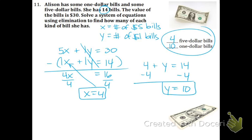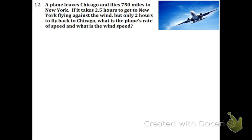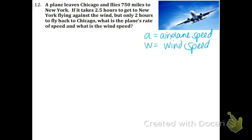Airplane problem coming up. A plane leaves Chicago and flies 750 miles to New York. If it takes 2 and a half hours to get to New York flying against the wind, but only 2 hours to fly back to Chicago, what is the plane's rate of speed and what is the wind speed? Let's define our variables: A is going to be the airplane speed and W is going to be the wind speed. Going from New York to Chicago, the wind is going with the plane, so we do A plus W. They combine because the plane is going faster when the wind is helping. Speed is always measured in miles per hour, so the miles is 750 no matter what.